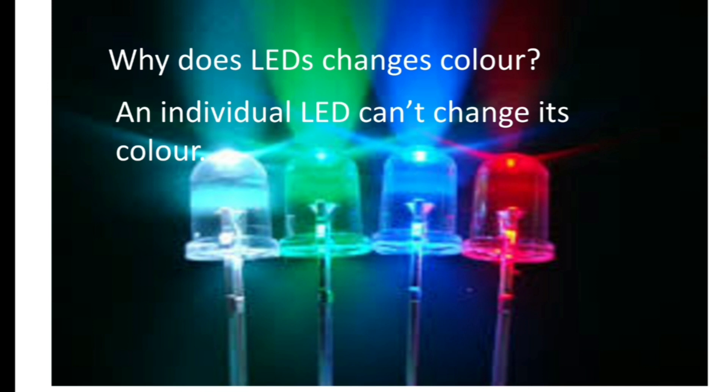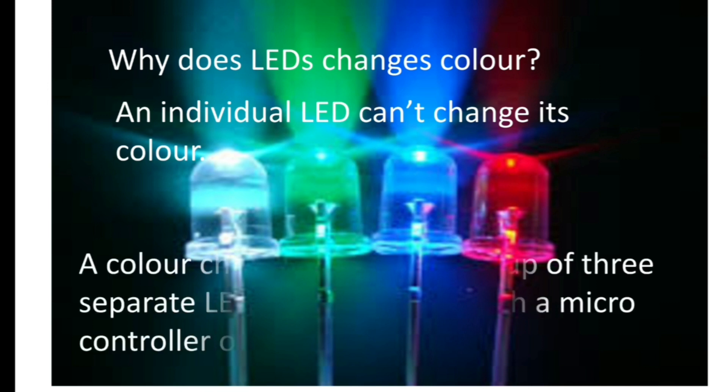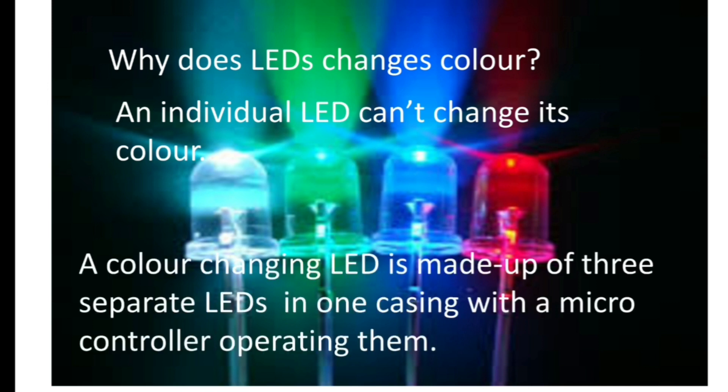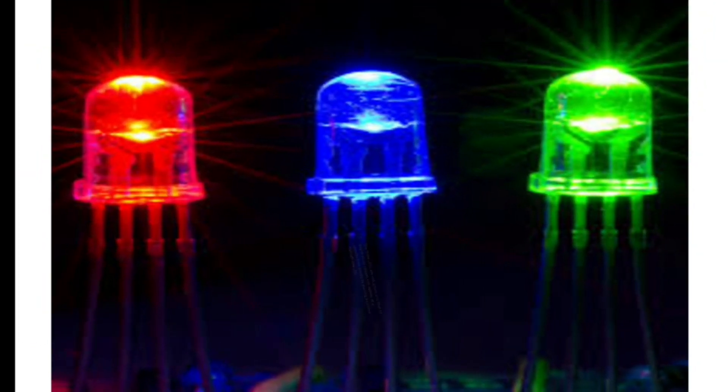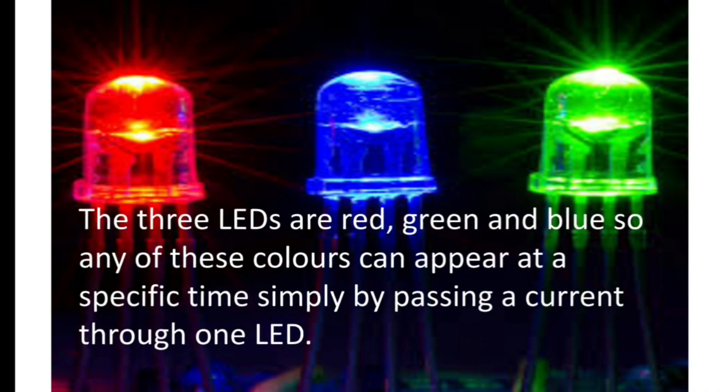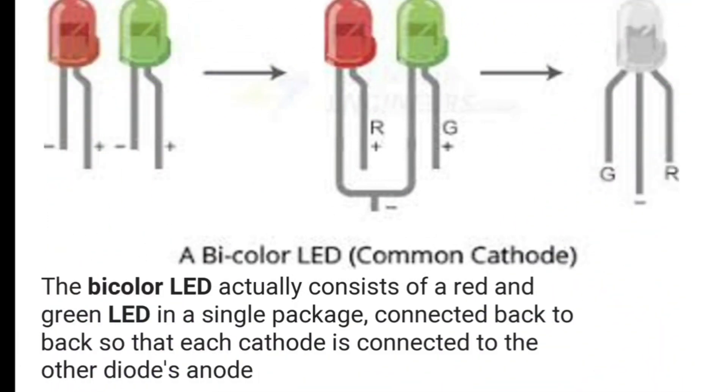An individual LED can't change its color. A color changing LED is made up of three separate LEDs in one casing with a microcontroller operating them. The three LEDs are red, green, and blue. Any of these colors can appear at a specific time simply by passing a current through one LED.